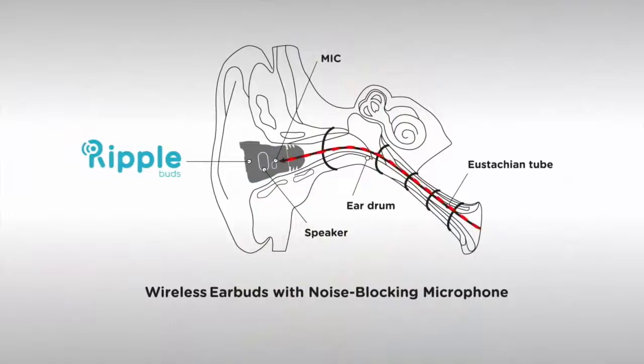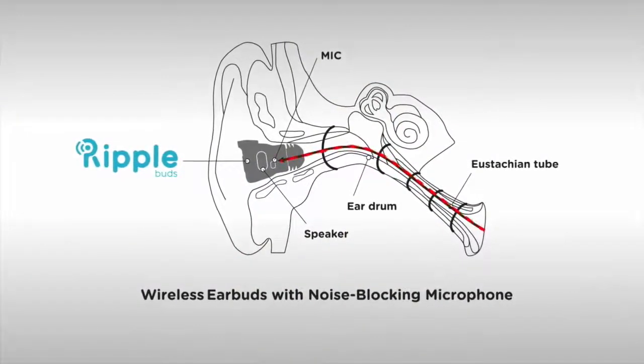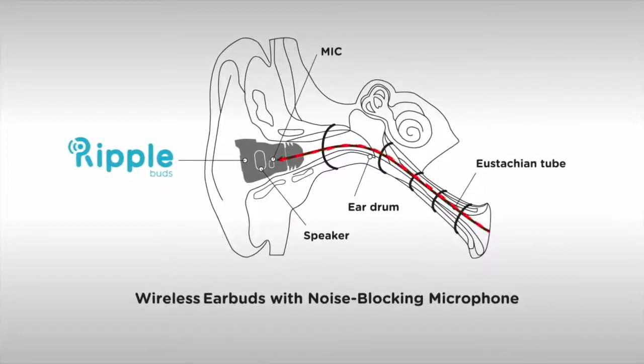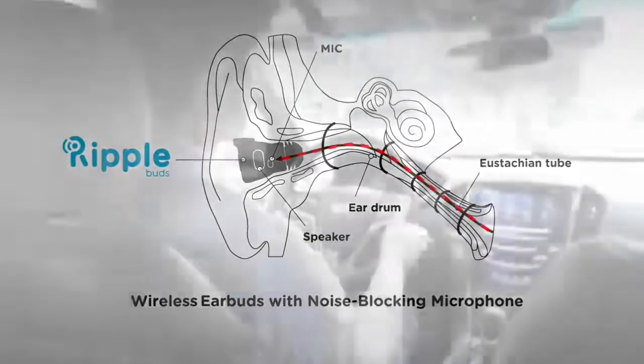As sound waves travel from your body to your mouth, they also exit through the eustachian tube and eardrum. Here, RippleBuds captures and transmits this sound to your caller before it can be interfered with by the sound waves around you.